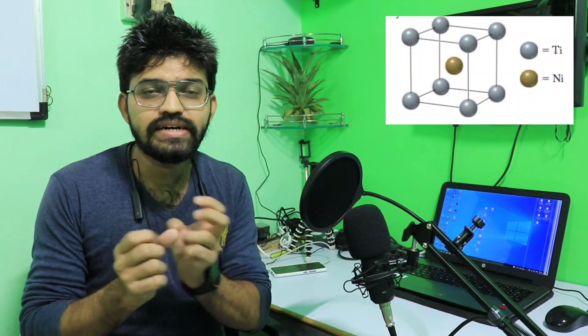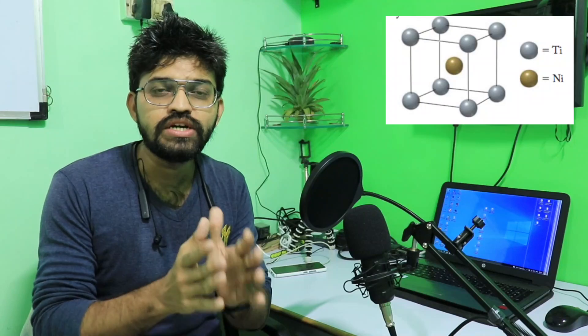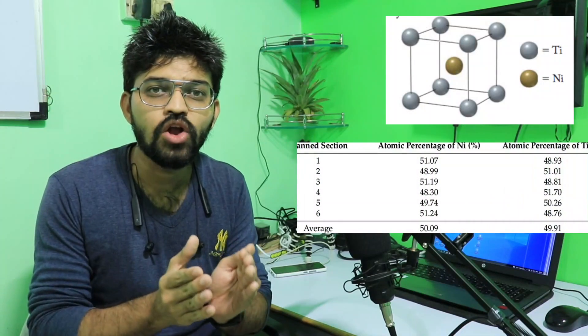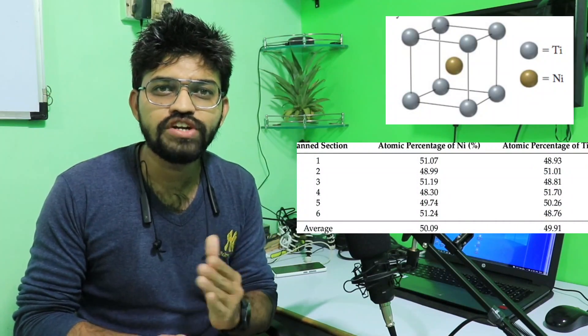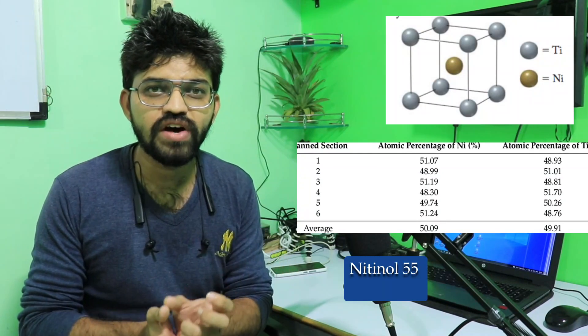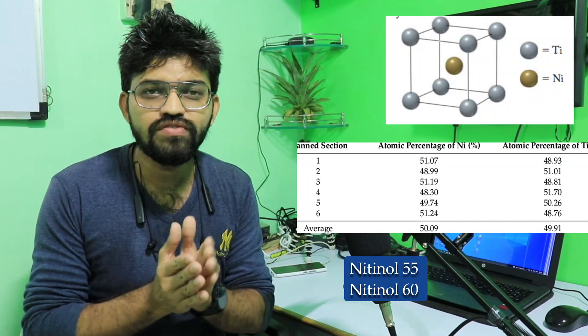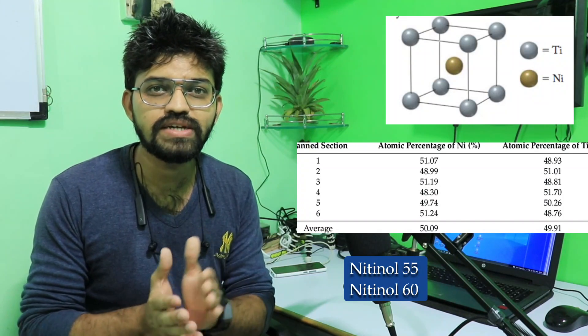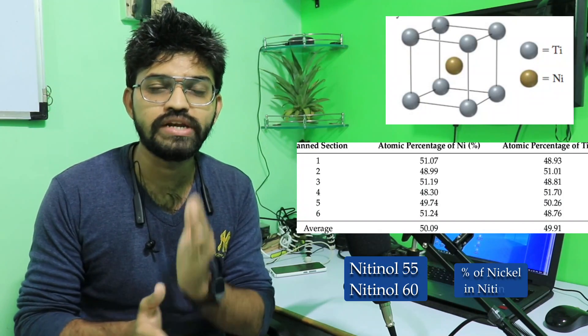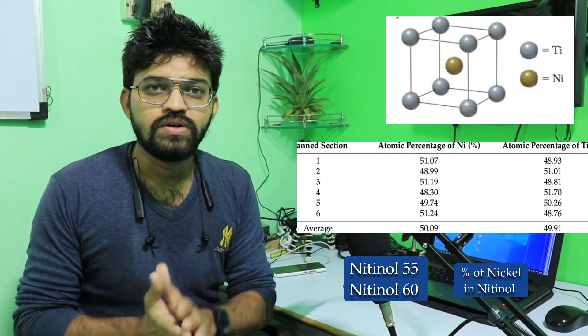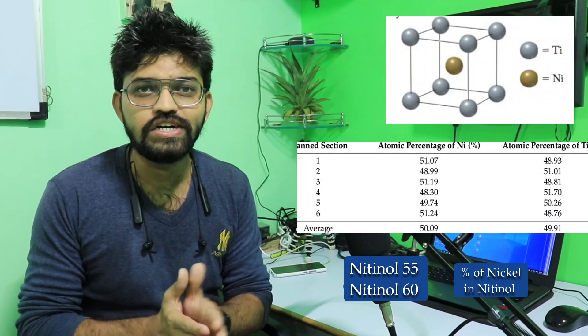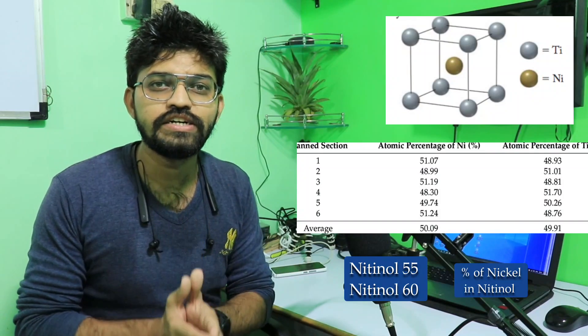Today's video topic is Nitinol. Nitinol is an alloy of nickel and titanium, both used in equal composition to make this alloy. There are different grades of Nitinol, such as Nitinol 55 and Nitinol 60. The number 55 in Nitinol 55 represents the percentage of nickel used in the alloy.